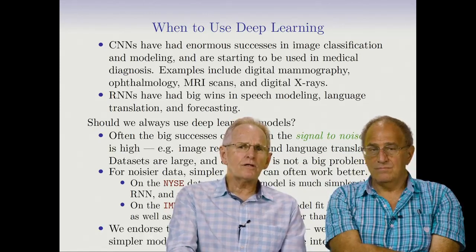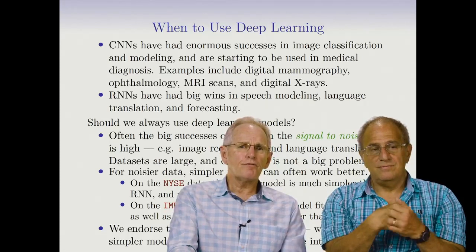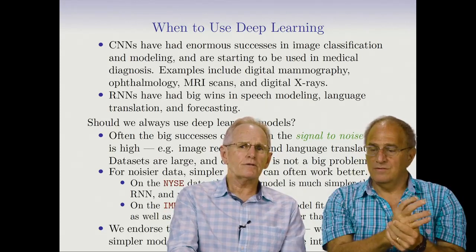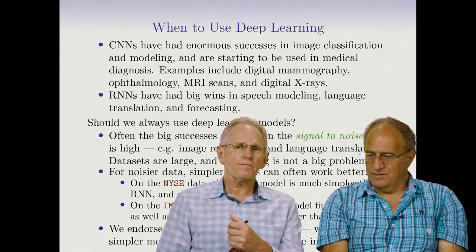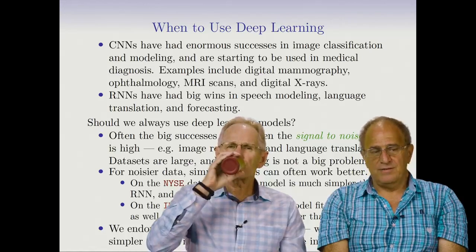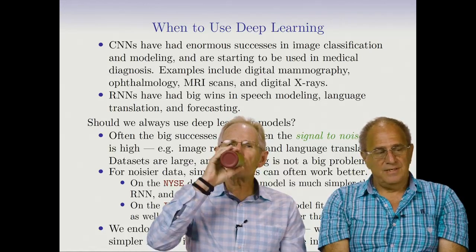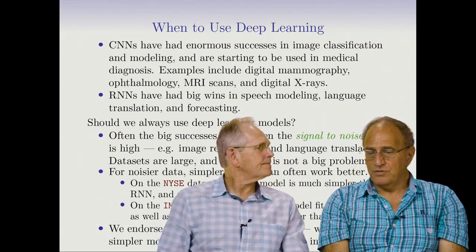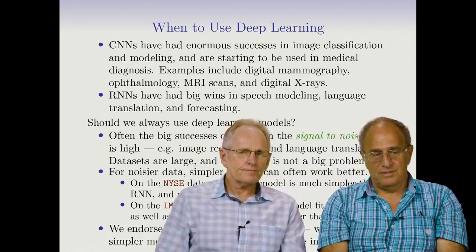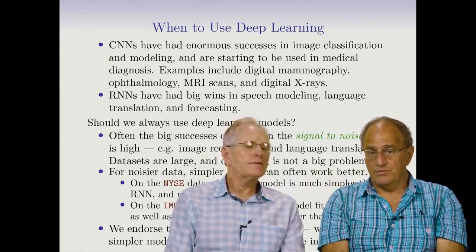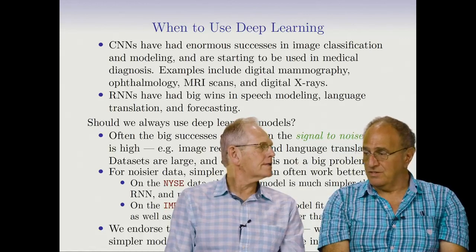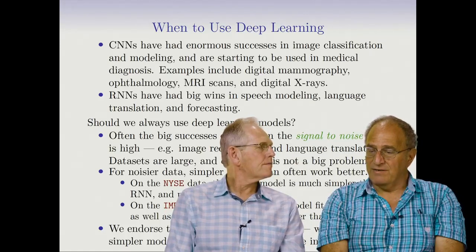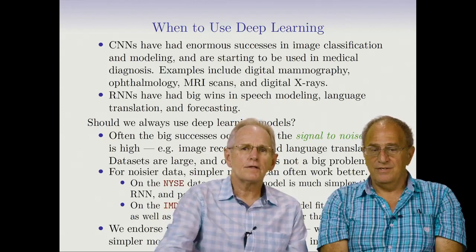We endorse the Occam's razor principle: we prefer simpler models if they work as well, because they're more interpretable. Also, recall that the successes we've seen with neural networks in this lecture — for images, time series, speech, movie reviews — all have inputs with some kind of temporal or spatial structure. Neural networks have the capability to model that kind of structure.